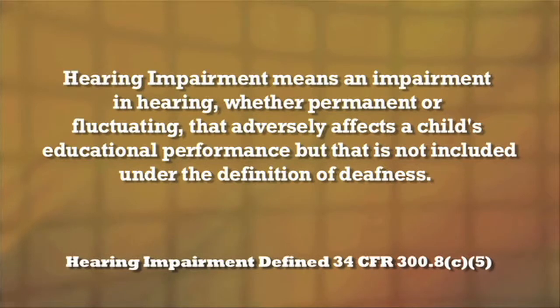Here's the definition of hearing impairment. Hearing impairment means an impairment in hearing, whether permanent or fluctuating, that adversely affects a child's educational performance, but that is not included under the definition of deafness.